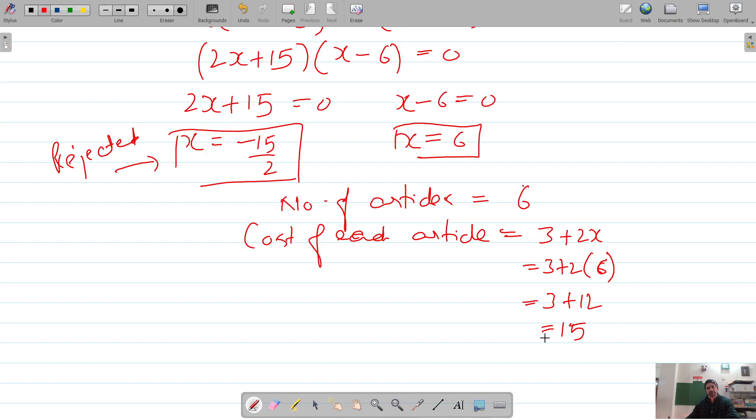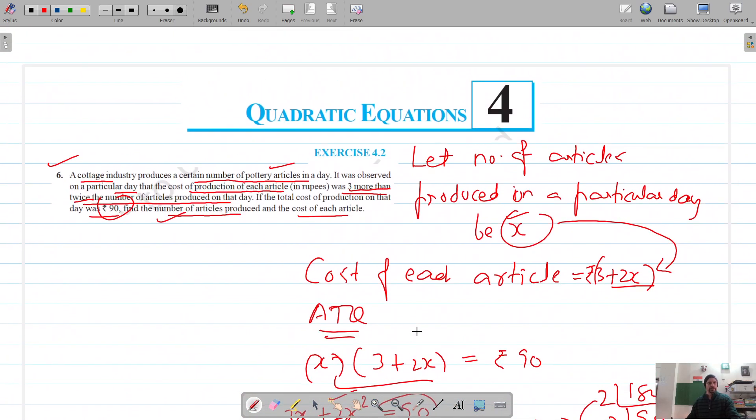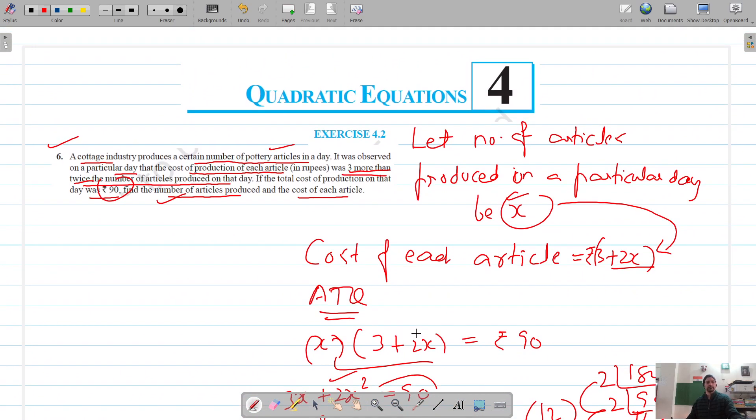The cost of each article is 3 plus 2 times 6, which is 3 plus 12, that is 15. So that is the cost of each article on that particular day, and the number of articles produced were six. Thank you for watching.